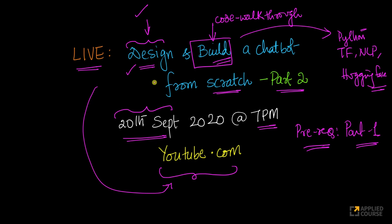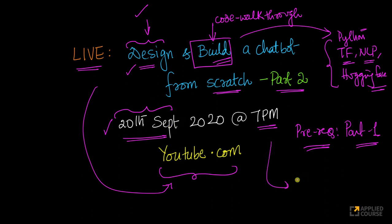In the first part, we did not do much of a code walkthrough. We discussed various models and gave intuition on some of them. But in part two, we will actually start implementing in Python using libraries like TensorFlow, NLTK, or other NLP-based libraries, and HuggingFace for transformer-based models. See you on the coming Sunday, the 20th of September at 7pm. This will also be a two-hour live session, and we hope we can finish this series on this coming Sunday itself.